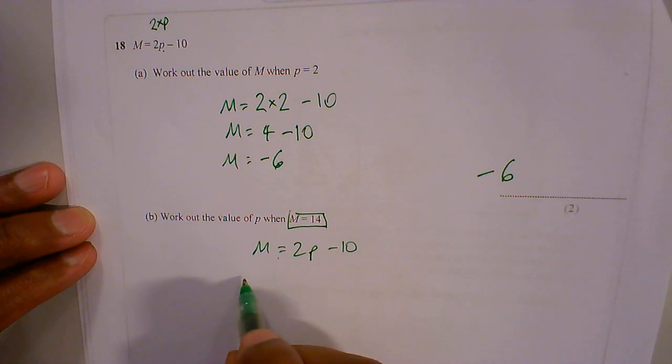So m is 14, 14 equals 2 times p, take away 10.